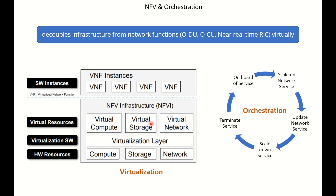If we want to incorporate certain resources related to OCU in the network — no problem. We have underlying hardware, we get compute, storage, and network, we put a virtualization layer on top of that, and we get the software instance for any function we want, whether it is a CU, DU, or RIC.